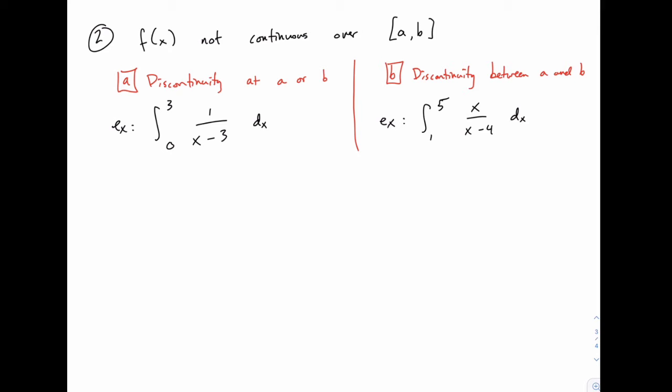And on the other hand, we could have a discontinuity somewhere in between. So for example, we have the integral from 1 to 5 of x over x minus 4 dx, and that has a discontinuity at x equals 4, because that would require you to divide by 0. So it's helpful to divide it into these two categories, because one helps us understand the other.